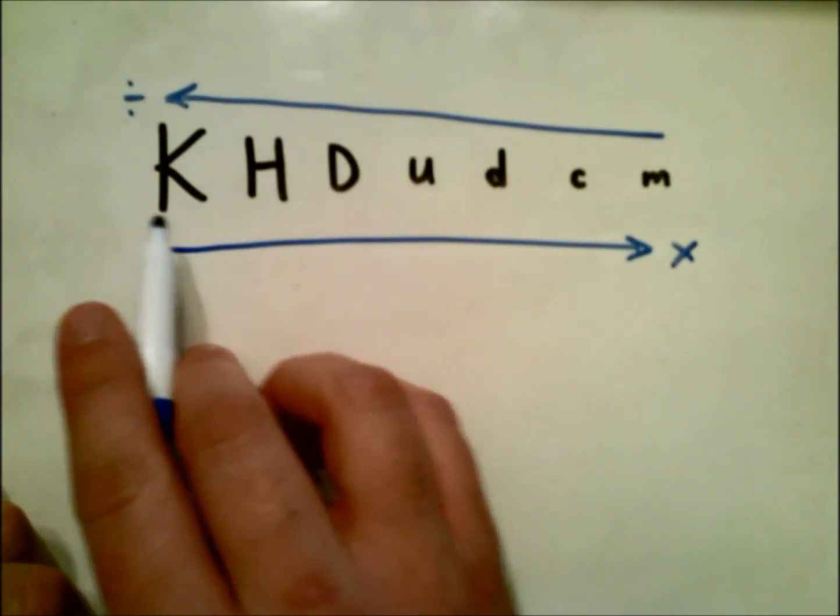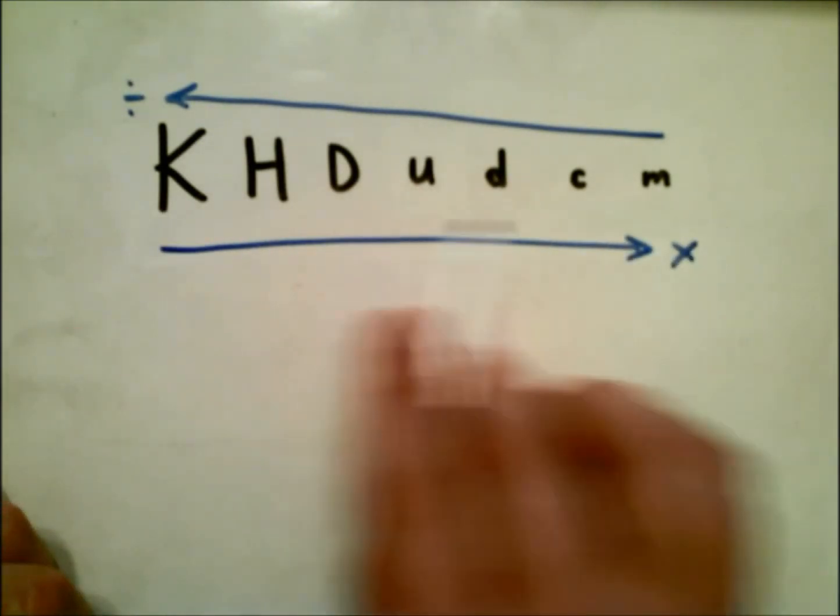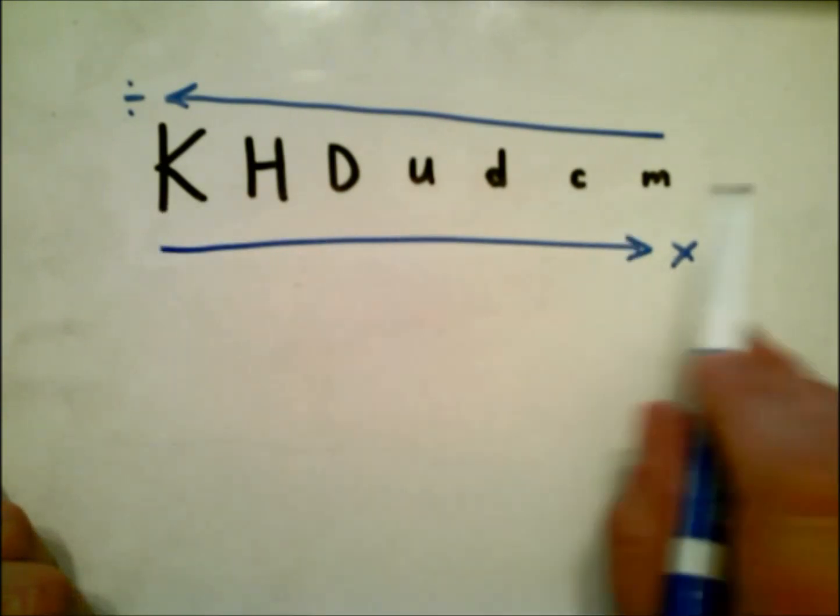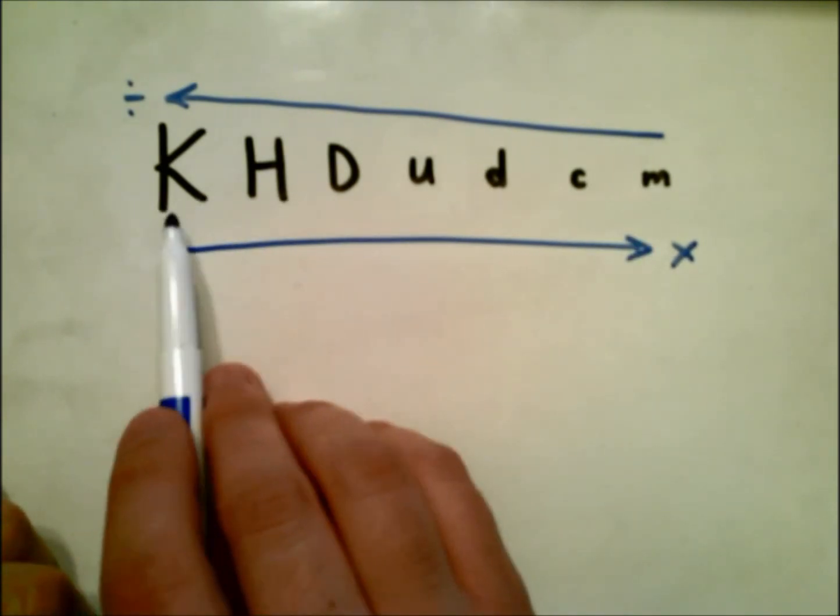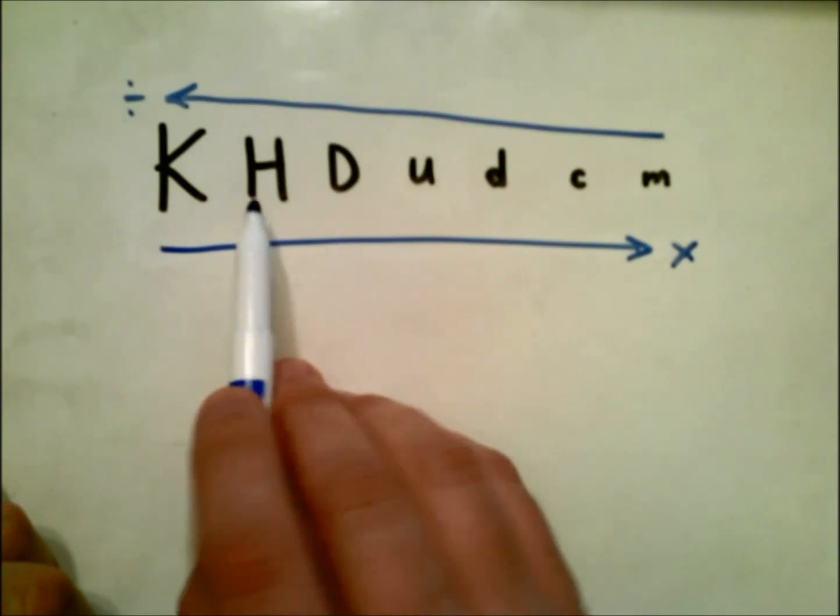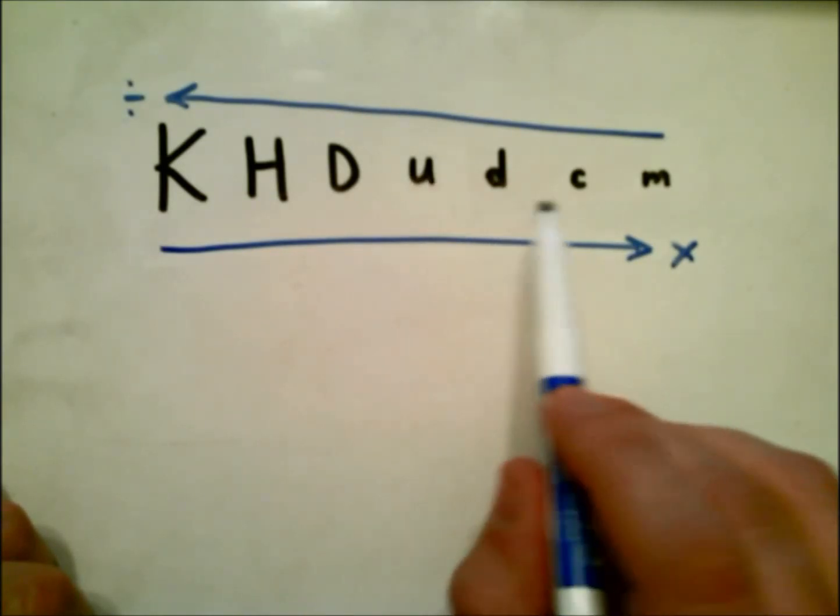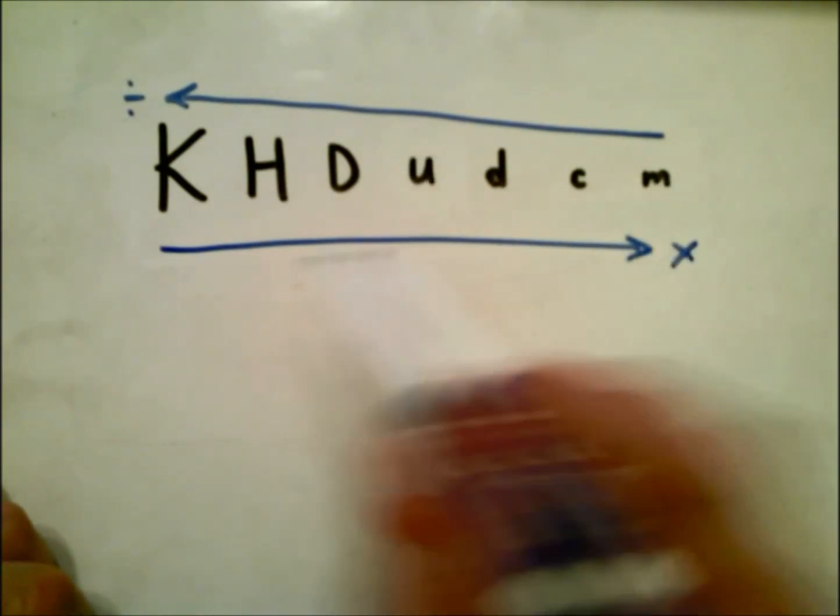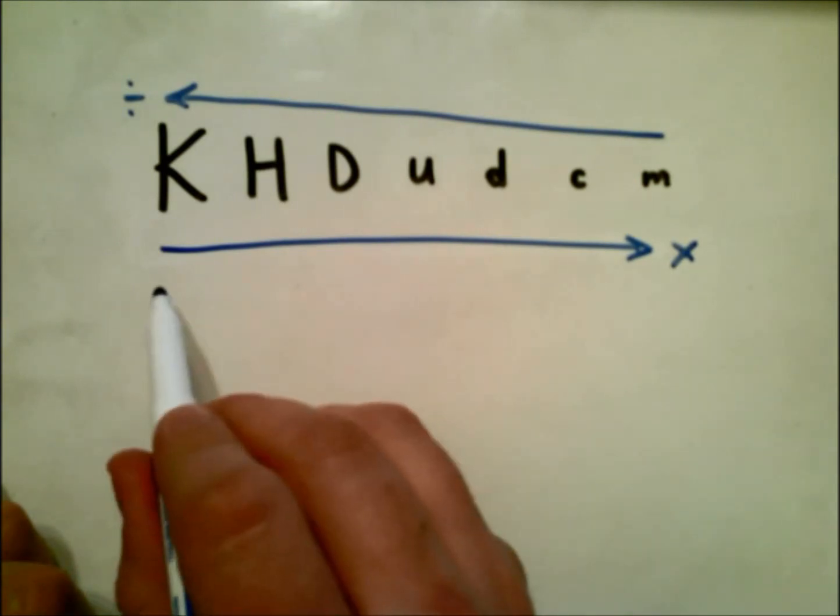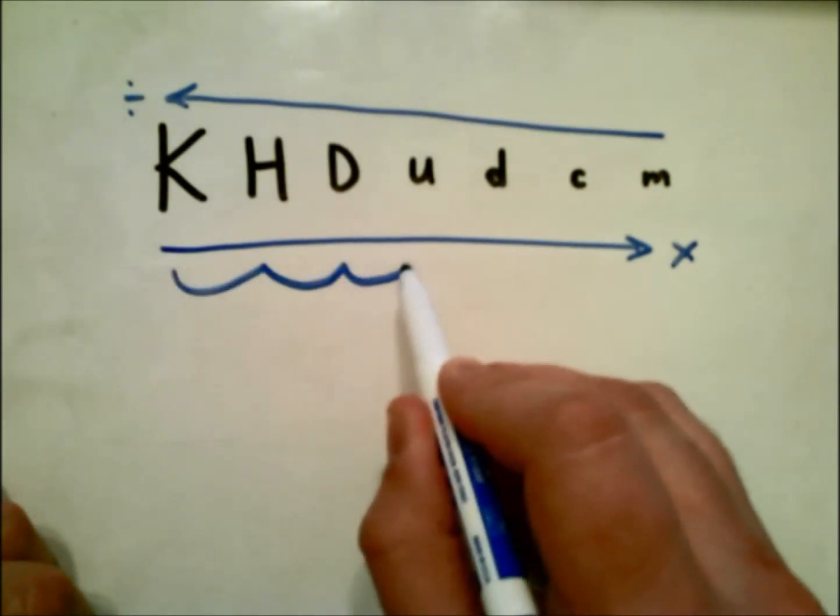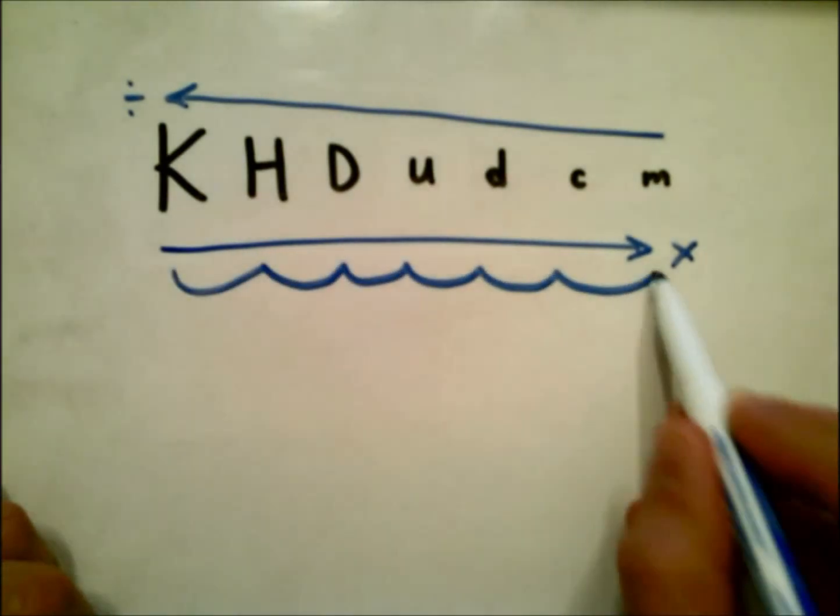Hopefully that's not confusing, but this is a helpful tool. What we have here are the prefixes for metric units. This is kilo, hecto, deca, unit or the base unit—so your meters, your grams and your liters. And here is deci, centi and milli. Now the great thing about this is that it is all by powers of 10 or by the place value system.